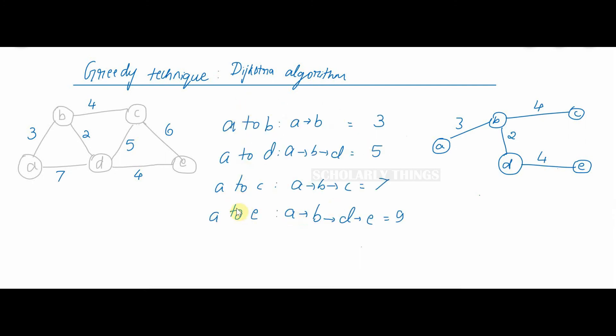The final list of shortest paths are like this: from A to B the length is 3. From A to D the shortest path is via B, A-B-D, it will be 5. From A to C the shortest path is via B, A-B-C, it will be 7. From A to E the shortest path is 9.